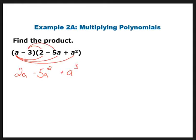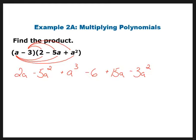Then I'm going to go ahead and distribute the negative 3 to everything: negative 6 plus 15a minus 3a². The general process is very simple, but what you need to be careful of is getting the correct signs. I'm taking negative 3 times everything in the second parenthesis. Signs are important because if you put a positive where there should have been a negative, you're going to get the completely wrong answer. That's not something I'm going to be lenient with — it's simple math, but we get in a hurry and don't do it correctly.